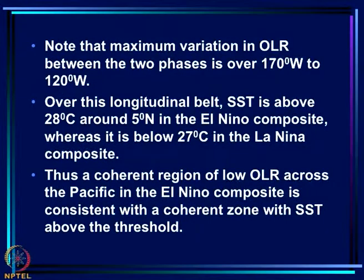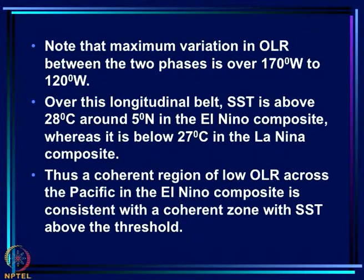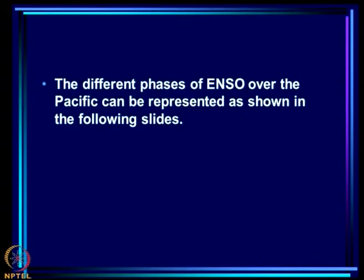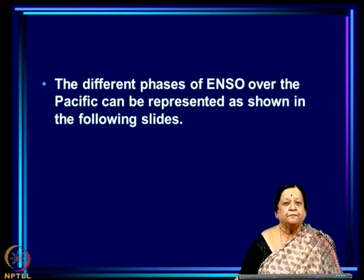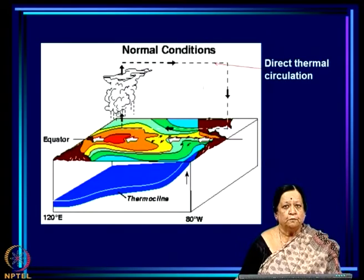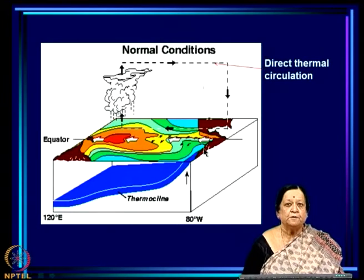The maximum variation in OLR between the two phases is over 170°W to 120°W. Over this longitudinal belt, the SST is above 28° around 5°N in the El Niño composite, whereas it is below 27° in the La Niña composite. Thus, a coherent region of low OLR across the Pacific in the El Niño composite is consistent with a coherent zone of SST above the threshold. Now we have looked at all the different attributes of the two phases; we will look at what they look like in terms of both atmosphere and ocean.